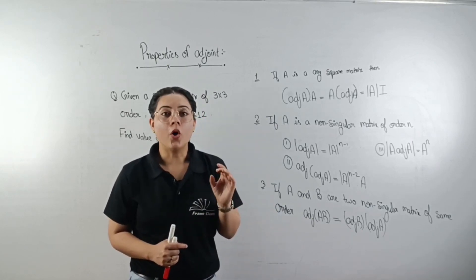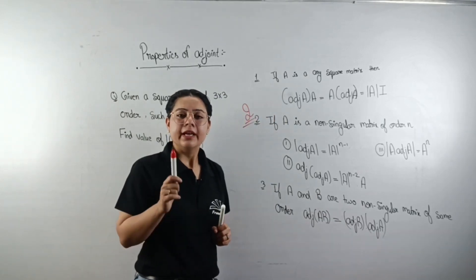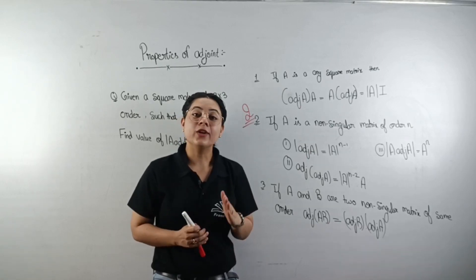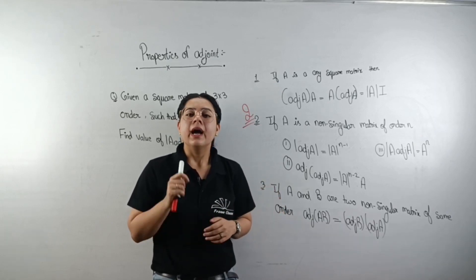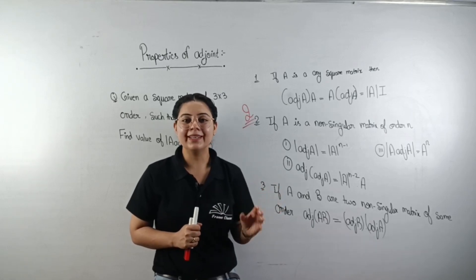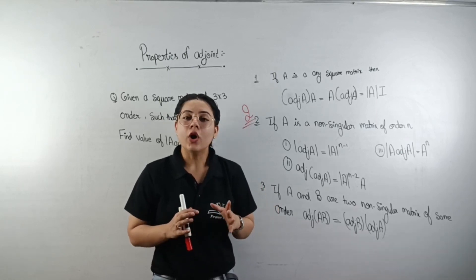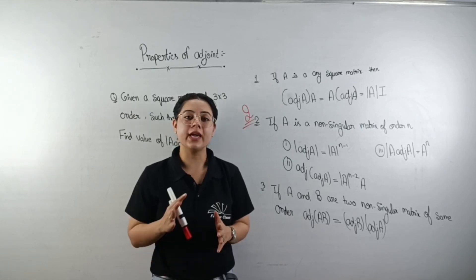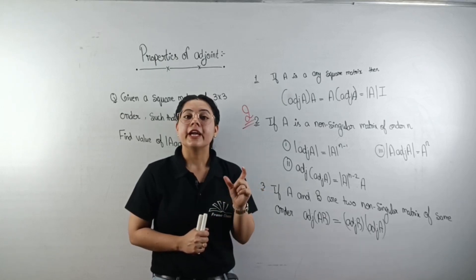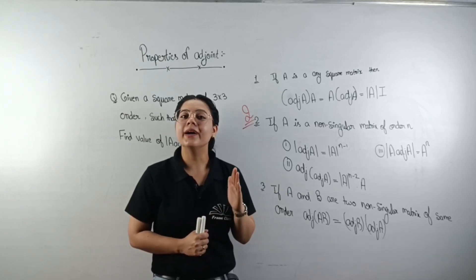The second property is very important. First, let's discuss singular and non-singular matrices. You have read about the determinant of a matrix. If the determinant of a matrix is equal to zero, then the matrix is called a singular matrix.